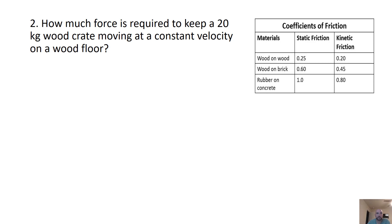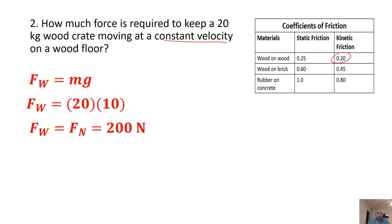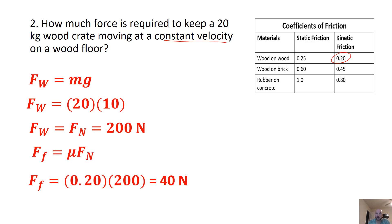Next question: how much force is required to keep a 20 kilogram wood crate moving at a constant velocity? The key here is we're going to use kinetic friction, because it's moving at a constant velocity, so the force applied equals the force of kinetic friction. Same weight from before, 200 newtons, but now we use a coefficient of kinetic friction of 0.20, and we get a final answer of 40 newtons.